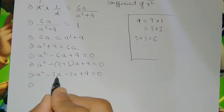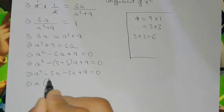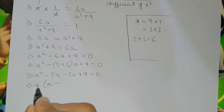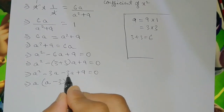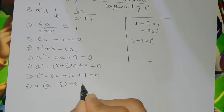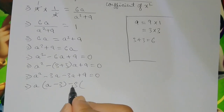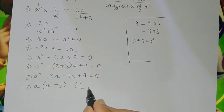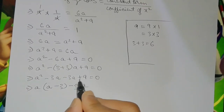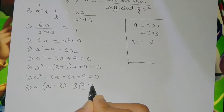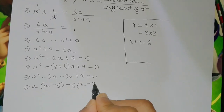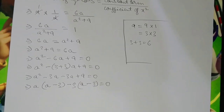Factoring a² - 6a + 9: note that 9 = 3 × 3 and 3 + 3 = 6. So a² - 3a - 3a + 9 = 0, giving a(a - 3) - 3(a - 3) = 0, which factors as (a - 3)(a - 3) = 0, i.e., (a - 3)² = 0.